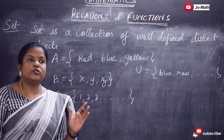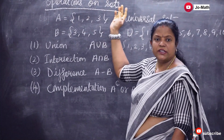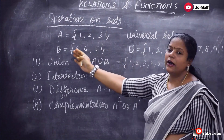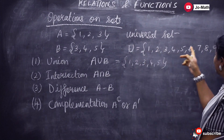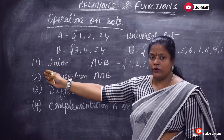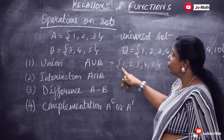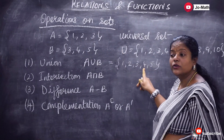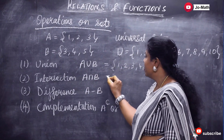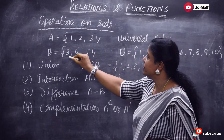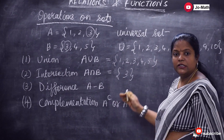Now let's see the operations on sets. Taking set A as {1, 2, 3} and B as {3, 4, 5}, and the universal set U as the natural numbers from 1 to 10. The first operation is union. A union B means we write all the elements of A and also B; if an element like 3 appears in both, we enter it only once. And then A intersection B is nothing but the common elements — here 3 is common in both, so A intersection B is {3}.